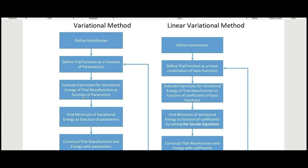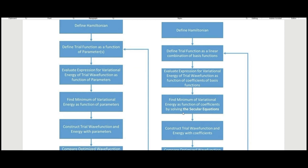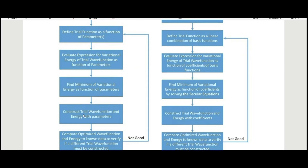In step two, both methods evaluate the expression for variational energy of trial wave functions — in the standard method as a function of parameters, and in the linear variational method as a function of the coefficients of the basis functions. In step three, the standard variational method finds the minimum variational energy by taking the partial derivative with respect to each parameter, whereas in the linear variational method we find the minimum by solving what are called the secular equations.